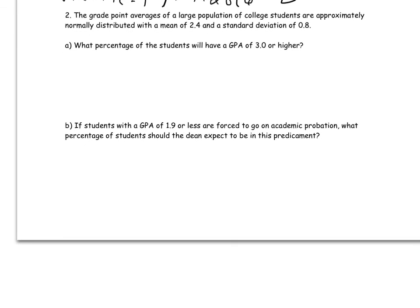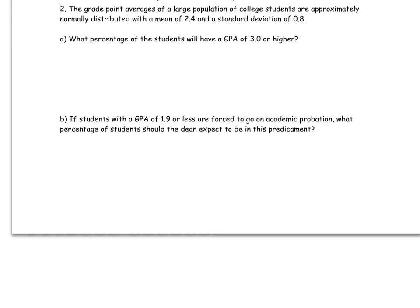Now let's look at problems 2 and 3. The grade point averages of a large population of college students are approximately normal with a mean of 2.4 and a standard deviation of 0.8. I'm going to use the letter g instead of x because we're talking about GPA. So g is a student's grade point average, and the distribution of g is normal with mean 2.4 and standard deviation 0.8.